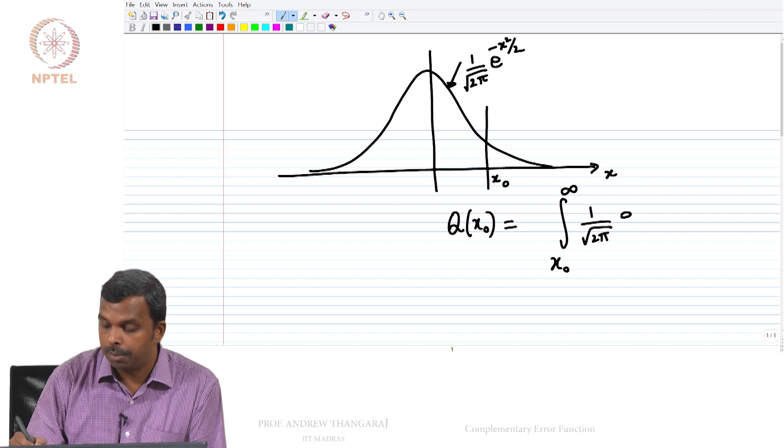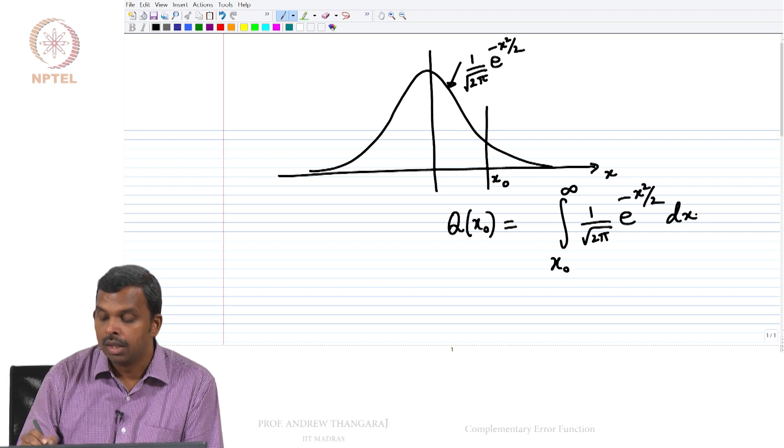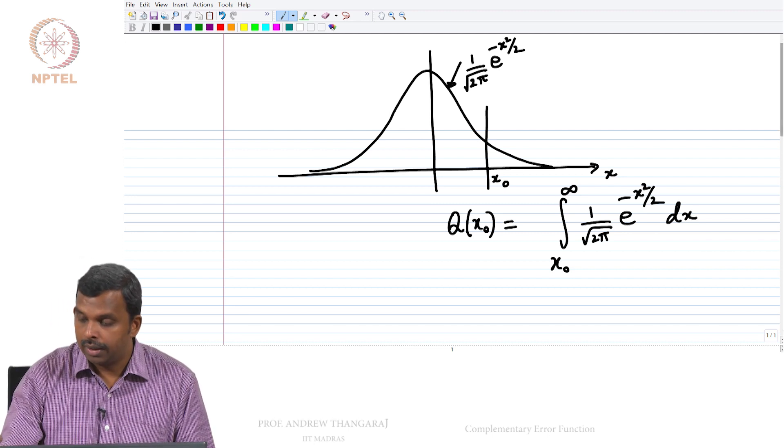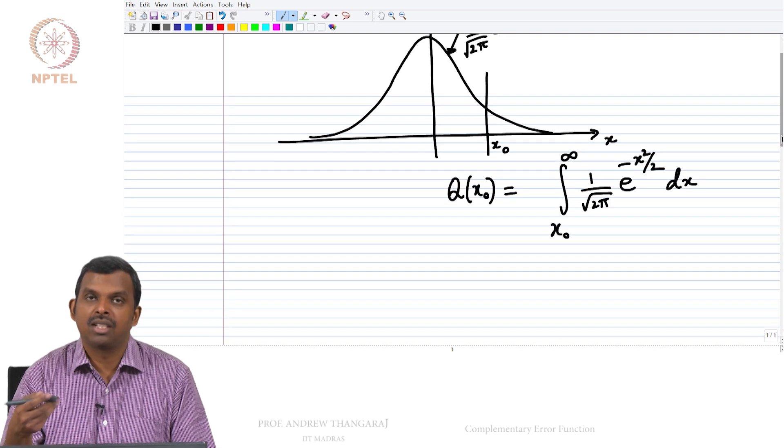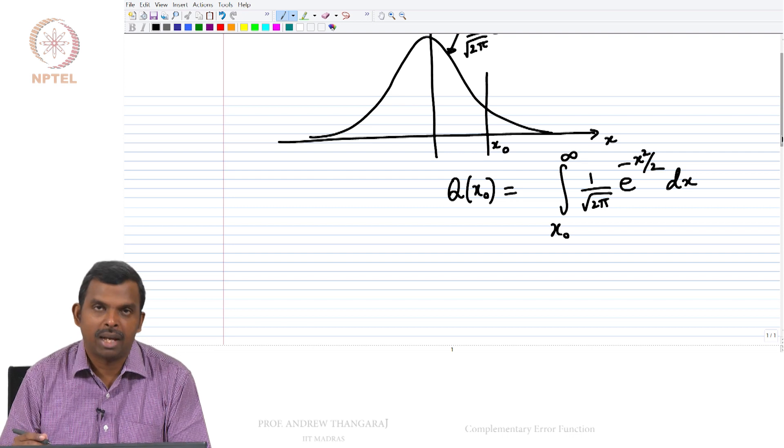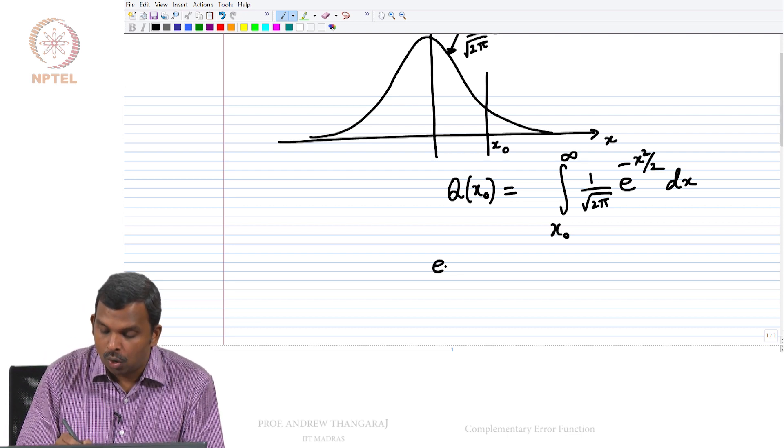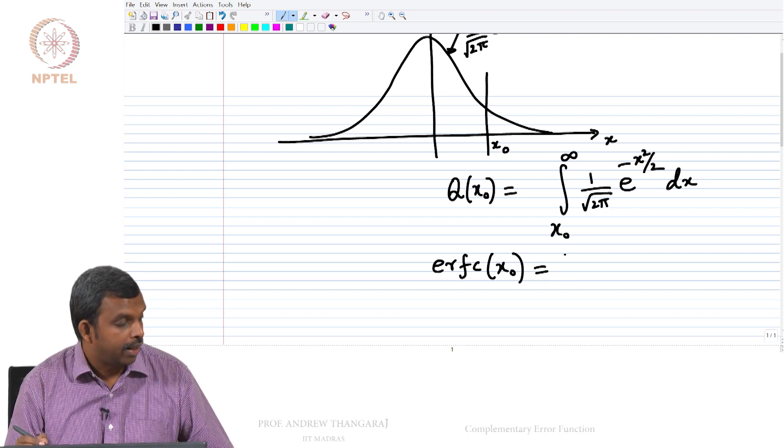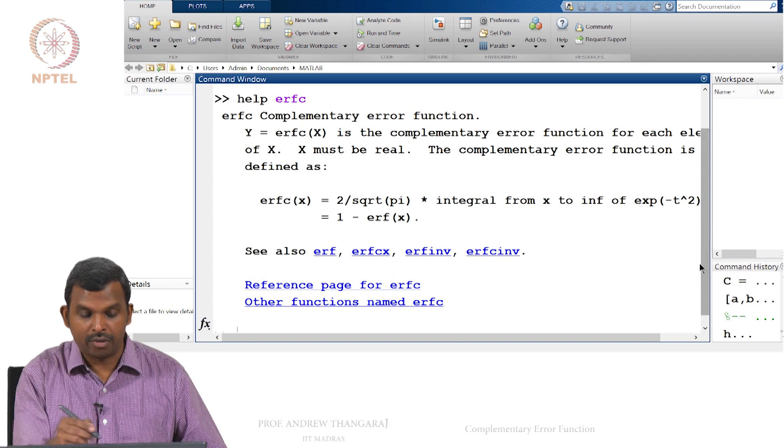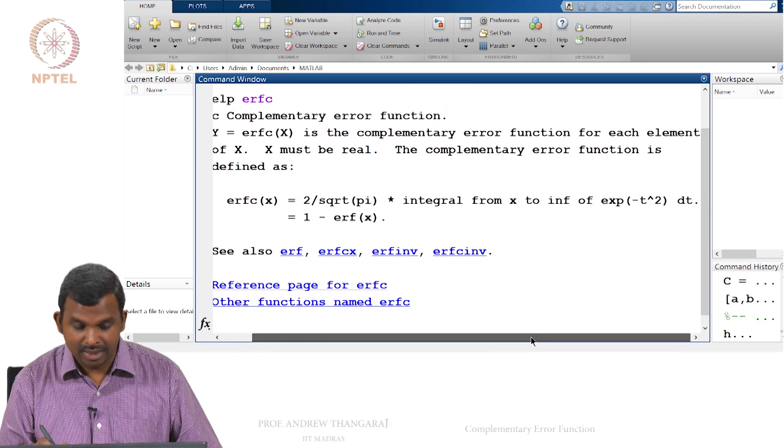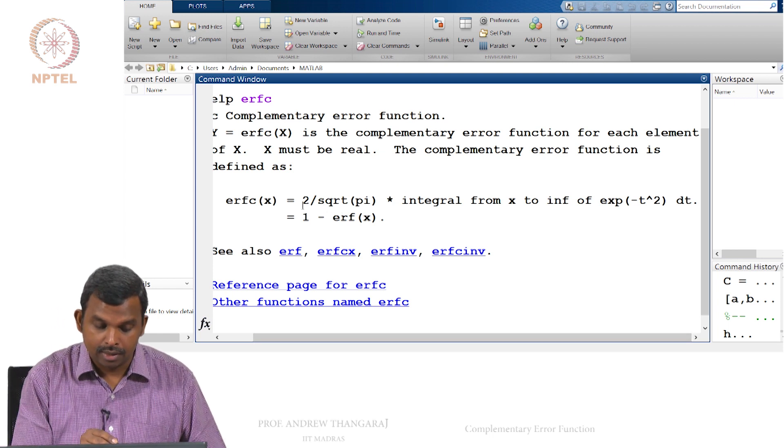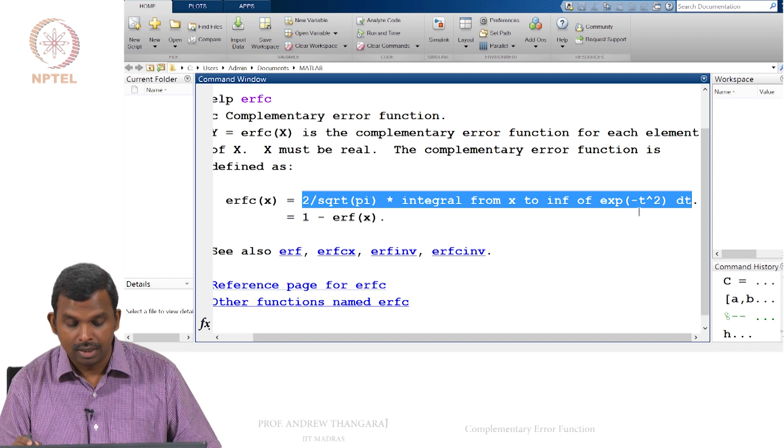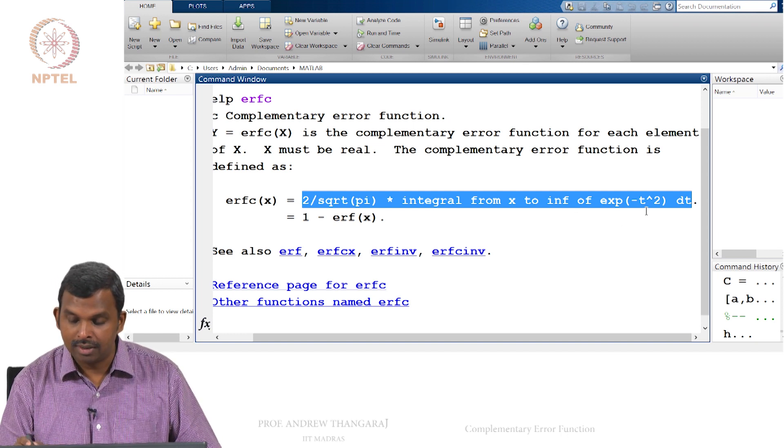So this is the function that we have to implement to be able to make that plot. Now it turns out MATLAB has a package which will evaluate the Q function for you, but we do not have to use that package because there is another function called ERFC, complimentary error function, which will look very similar to this. In fact, you can go to MATLAB and type help ERFC which is what I have done here and you see ERFC is very similar to Q. It is 2 by square root of π integral from x to infinity. So let me write it on the other page and we will see how to manipulate one to get the other. It is quite straightforward.